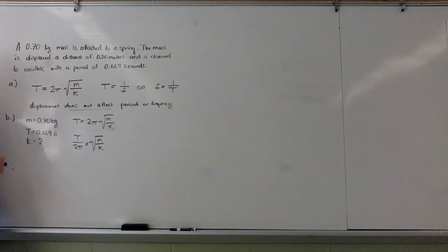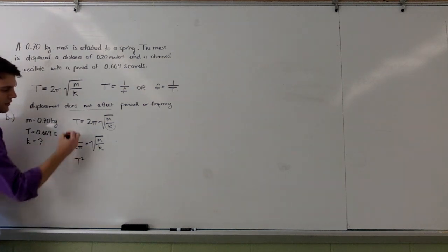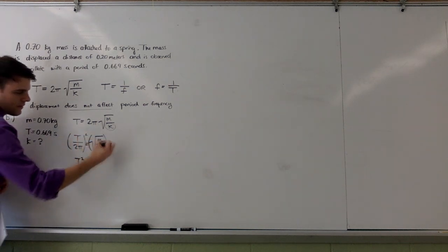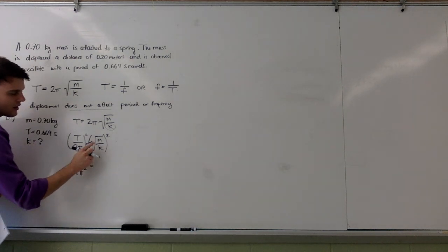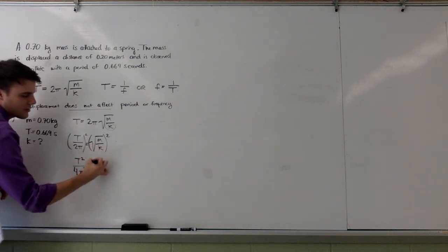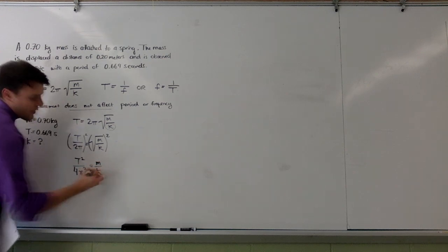Then I need to get rid of my radical sign, and I will do that by squaring both sides. I will end up with period squared over, now be careful, 2 pi squared becomes 4 times pi squared. And on this side, my radical disappears. So I have m over k.